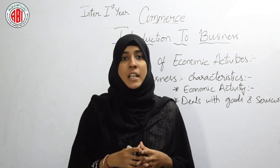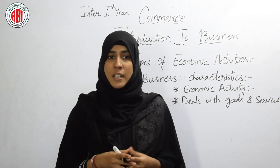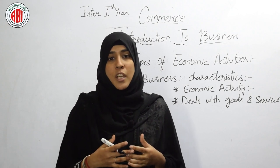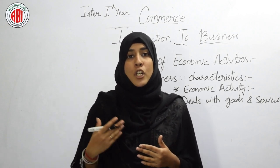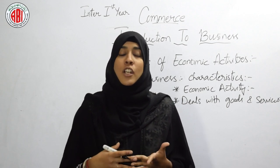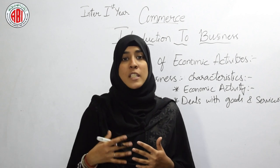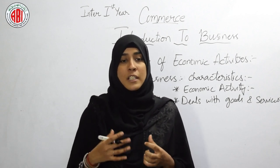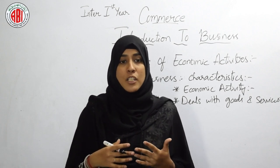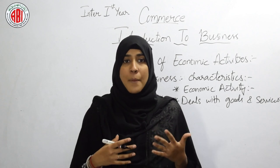Goods dealt with in business may be consumer goods or capital goods. Consumer goods are meant for direct use by the ultimate consumer — for example, clothes, shoes, books, and bags. Capital goods, also known as producer goods, are not intended for direct consumption — for example, equipment, tools, and machinery are all examples of capital goods.